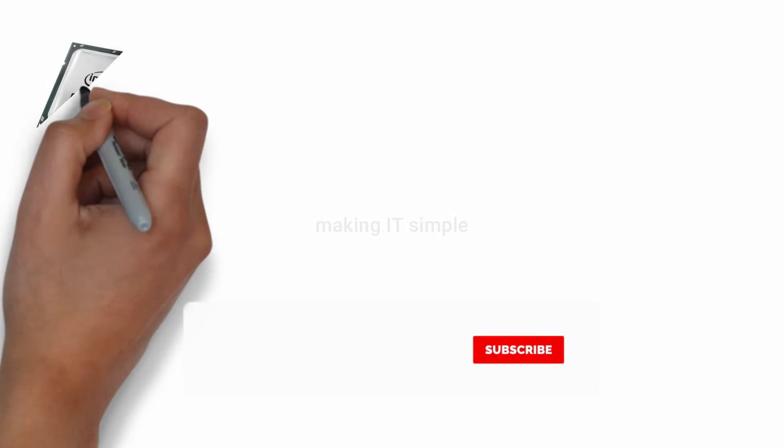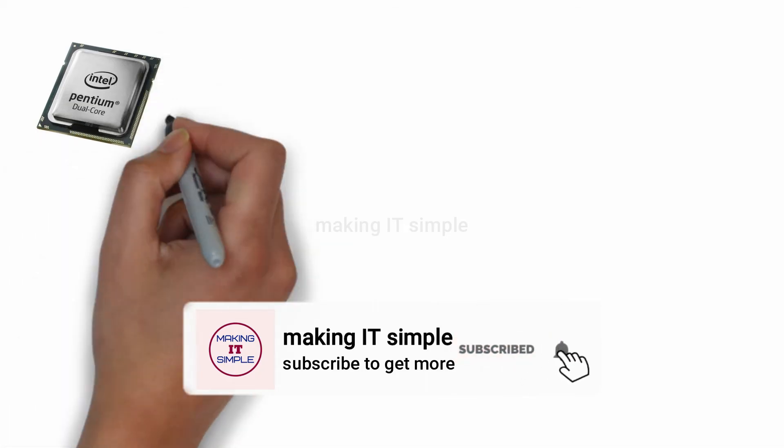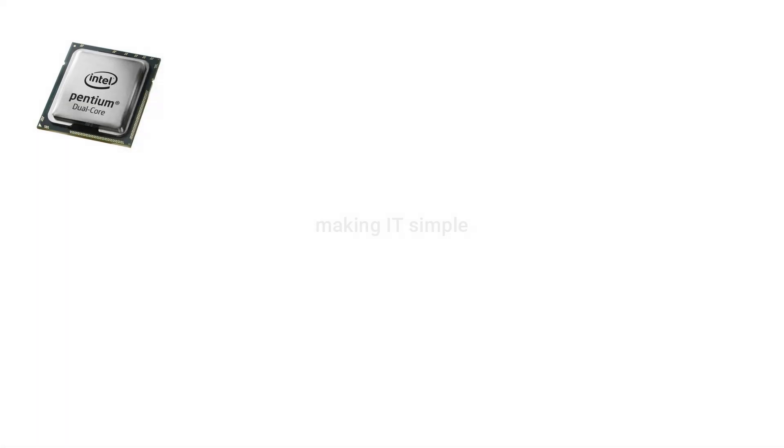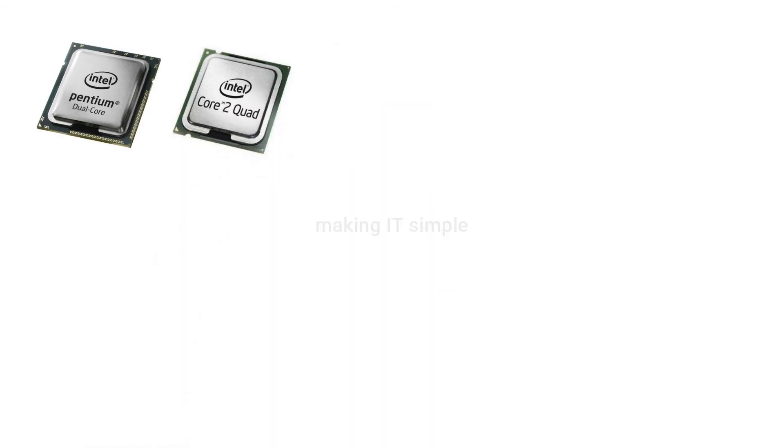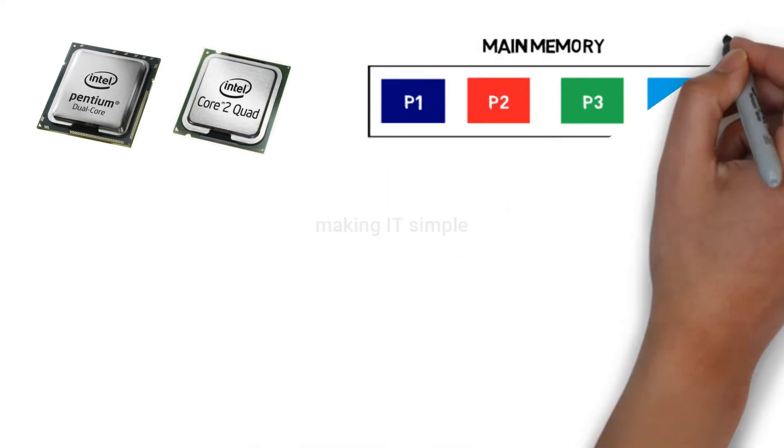Let's simplify the concept. You must have heard of dual-core or quad-core processor. There can be 2, 4, or many processors. All these processors share the same memory and input-output devices. All the processors are loaded into the main memory.